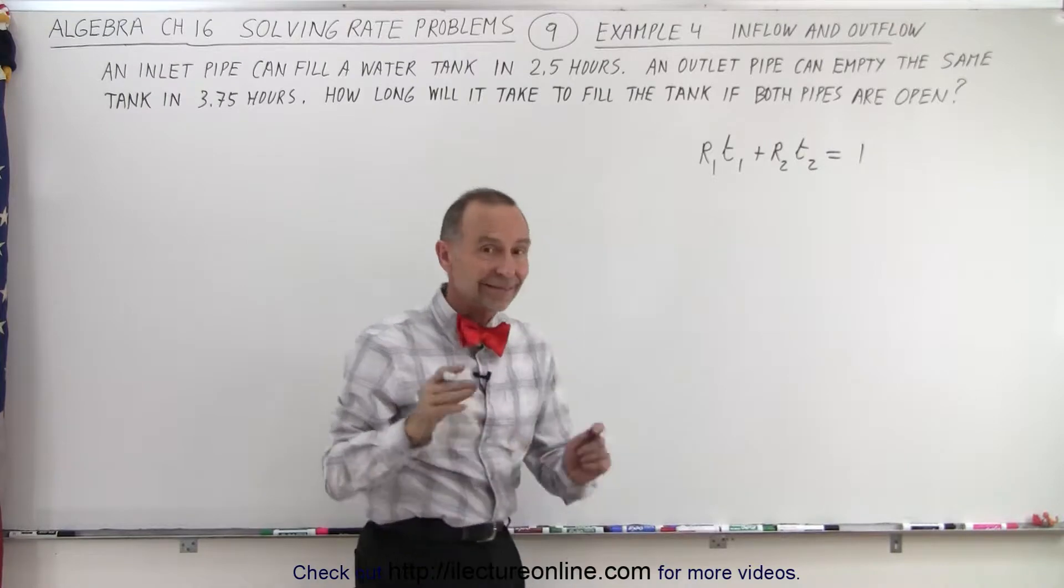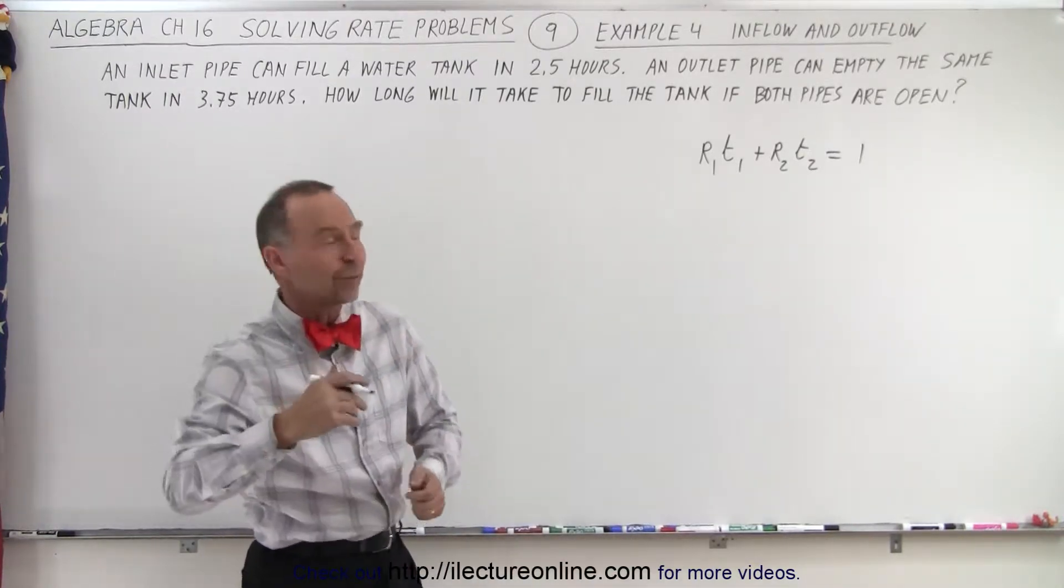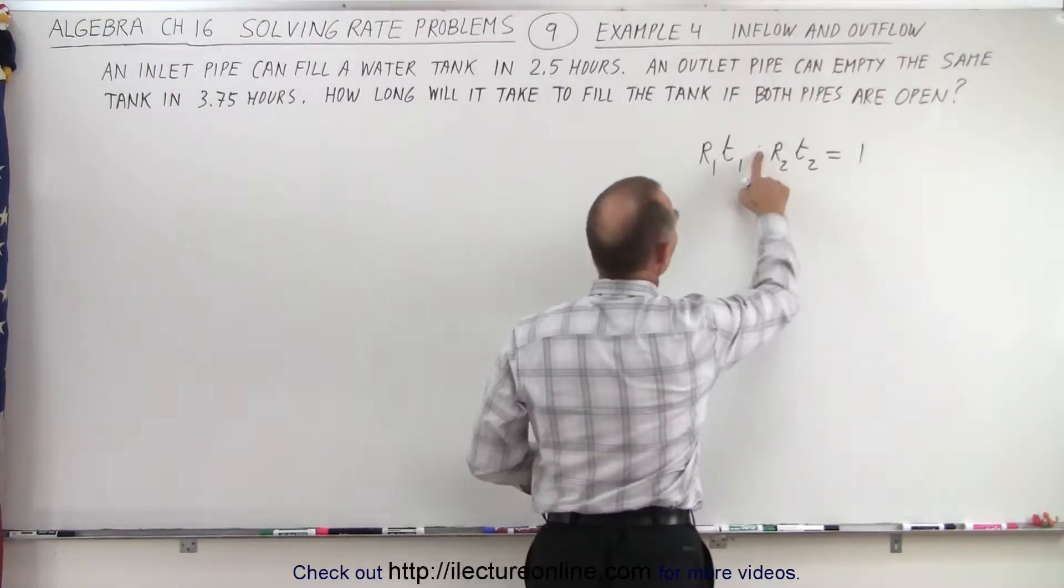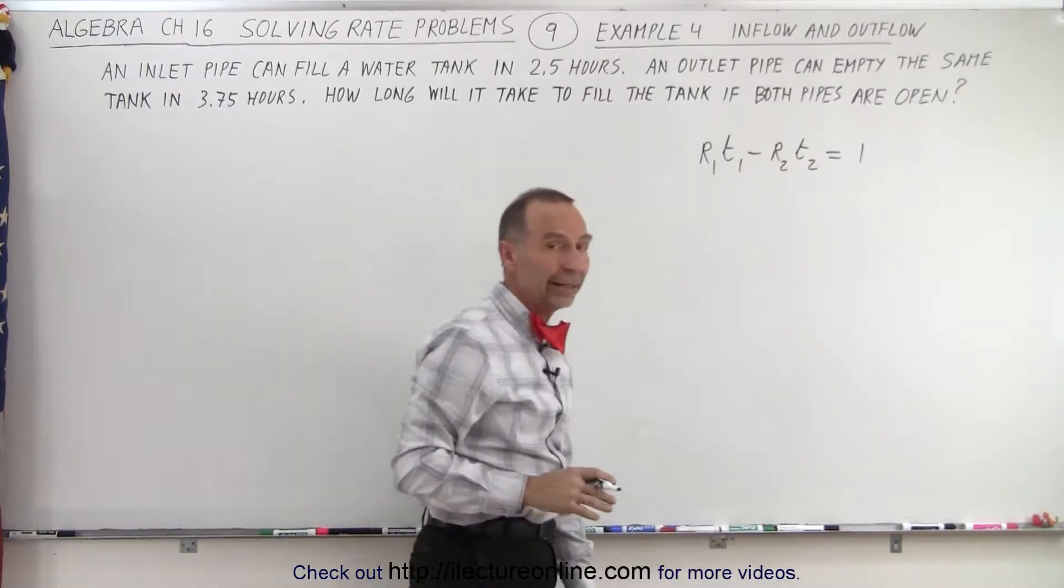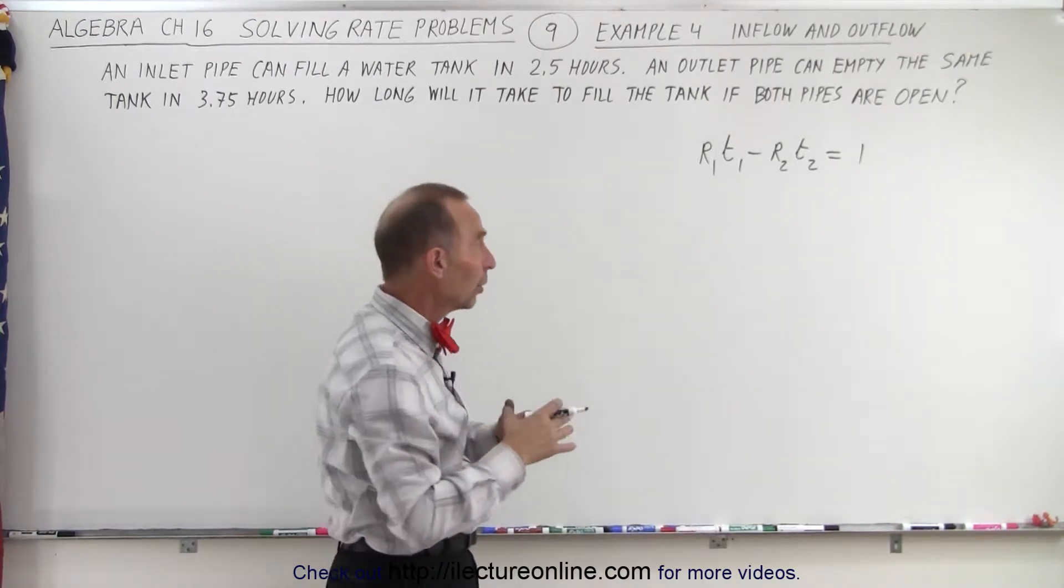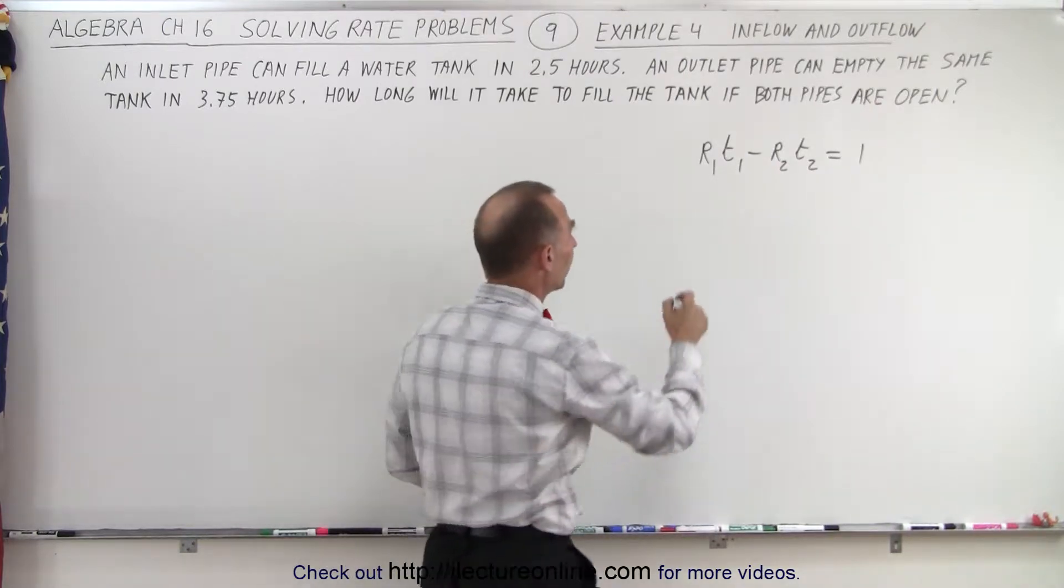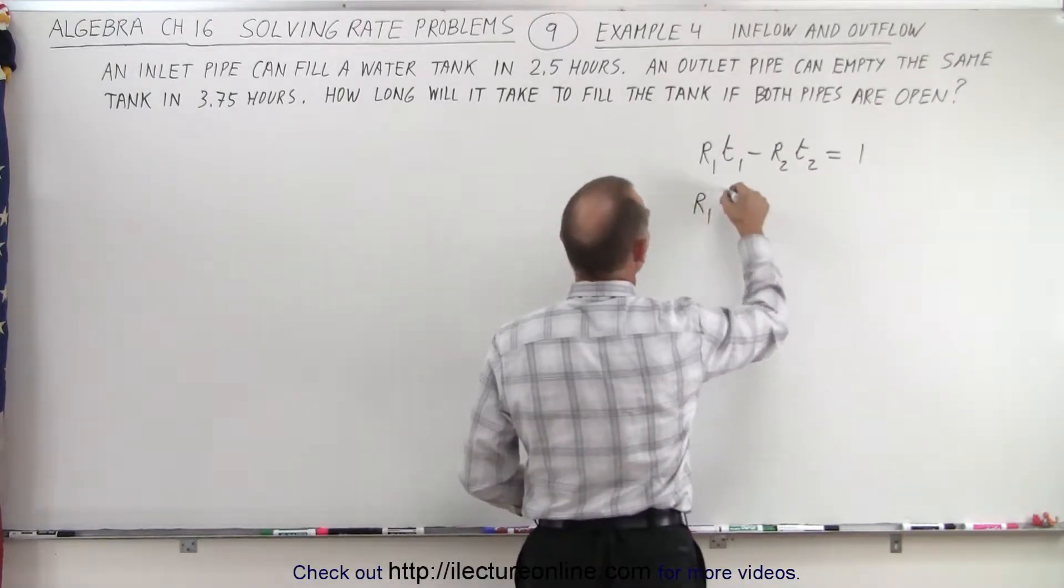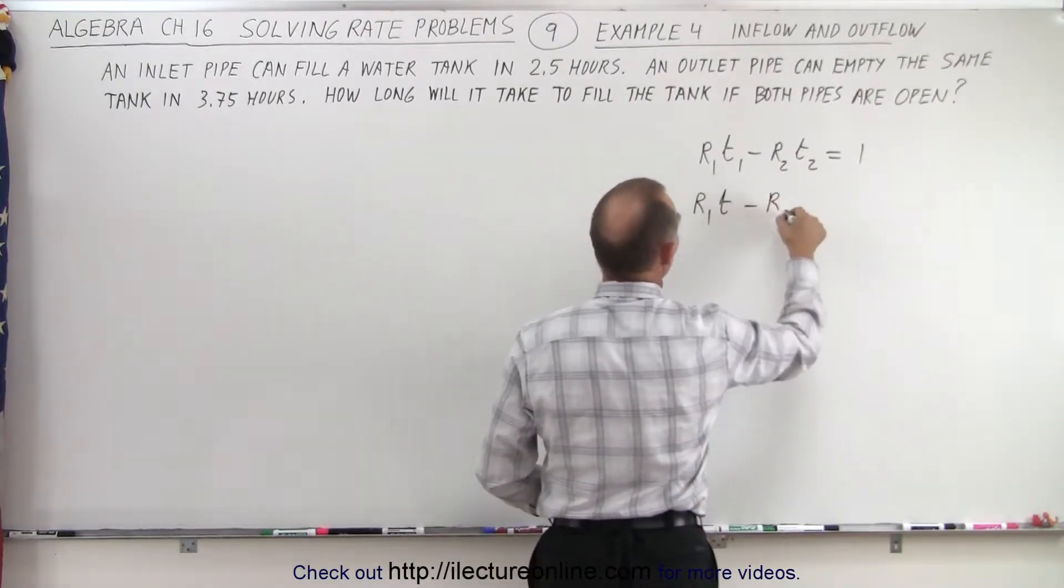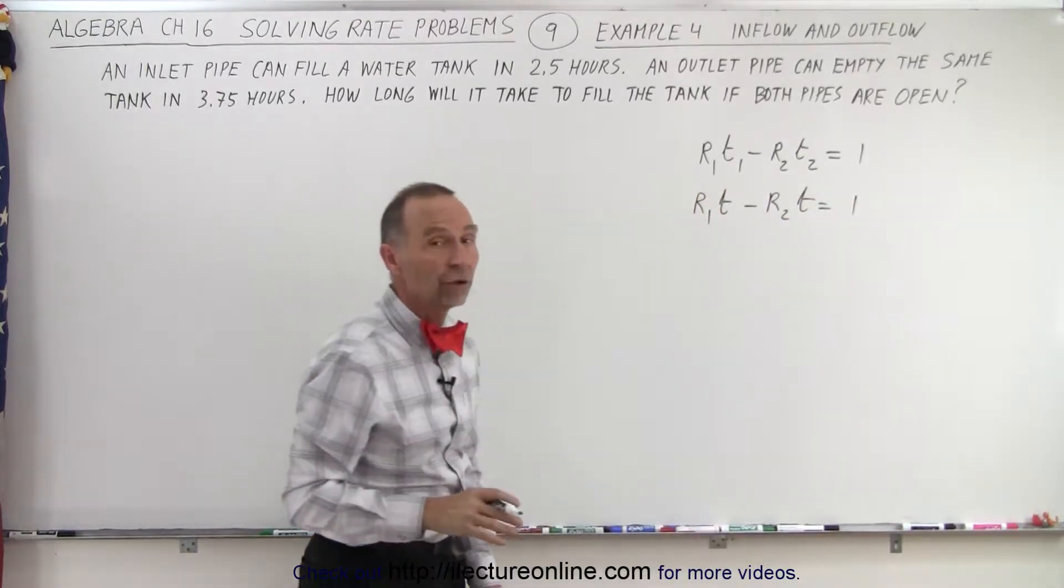But in this case, the outlet pipe is not adding to the tank, it's taking away from the tank. So instead of having a plus there, we may want to make it a minus there. And on top of that, since both the outlet and the inlet pipe will operate for the same amount of time, T1 and T2 are equal. So we can write R1 times T minus R2 times T equals 1, and that will solve the problem.